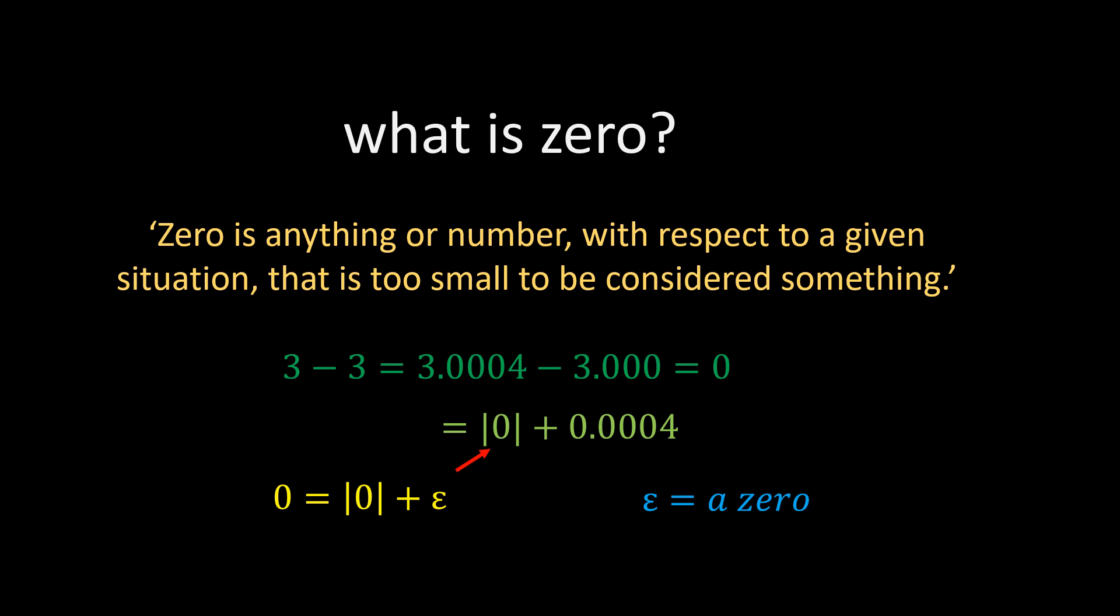Before we continue, please don't forget to click on that subscribe and like button to support this channel. Those clicks really count. Did you know that multiplication is repeated addition? For example, 2 times 3 means add 2 3 times. That is, 2 plus 2 plus 2, which is equal to 6. This is the same as 3 times 2, which means add 3 2 times, which is 3 plus 3, which is equal to 6. That is why we say multiplication is commutative.